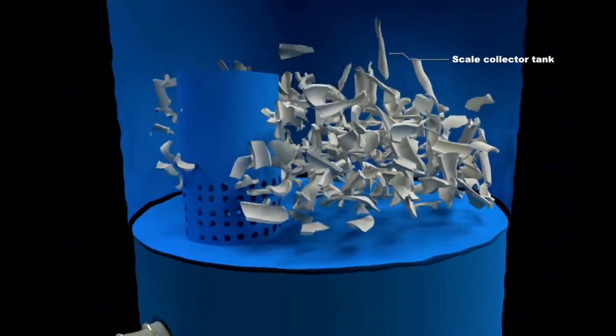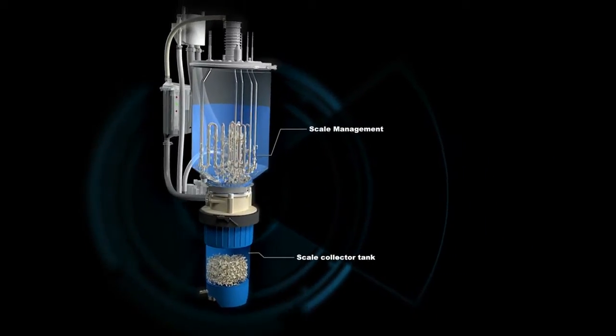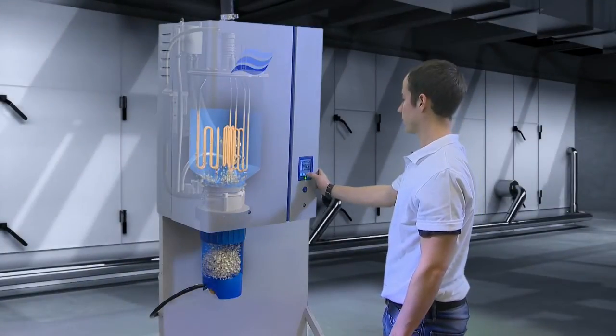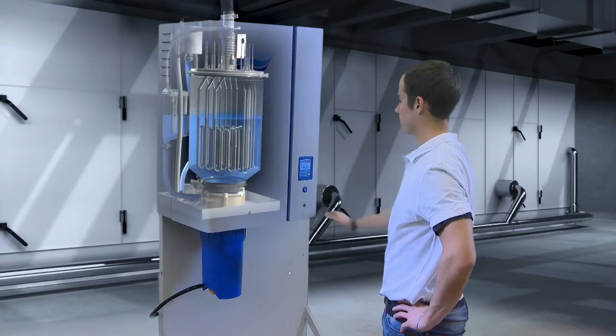The cold water pool directly above the scale collector tank also prevents scale from blocking the water inlet or drain orifice. These unique scale management features not only extend operating time between services considerably, but also simplify maintenance.